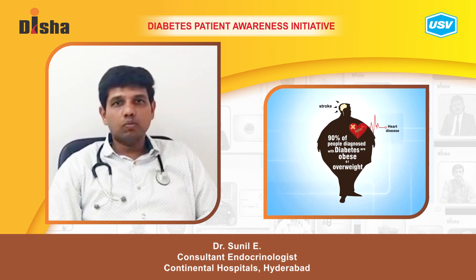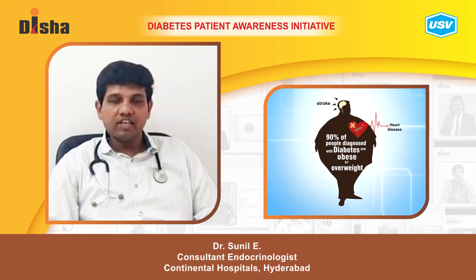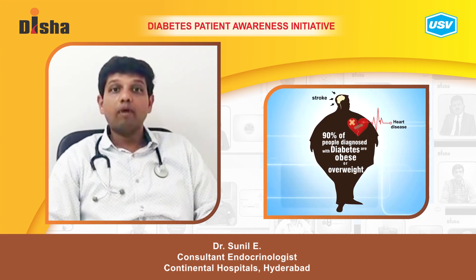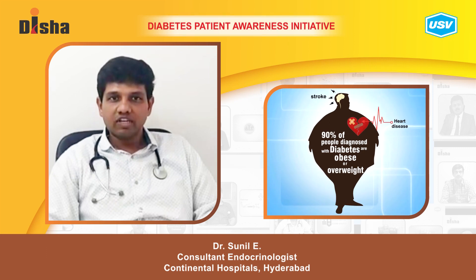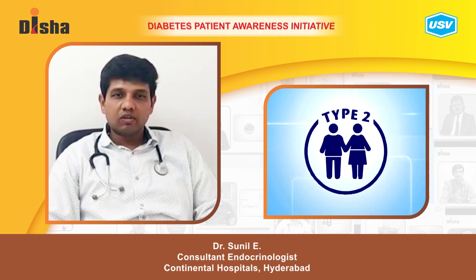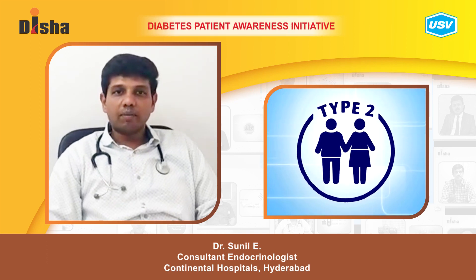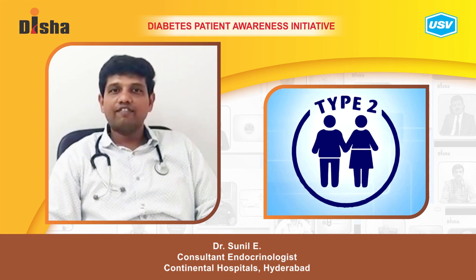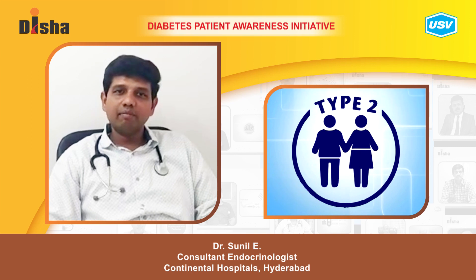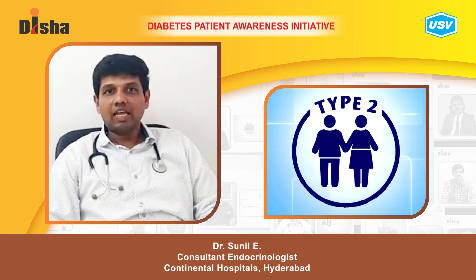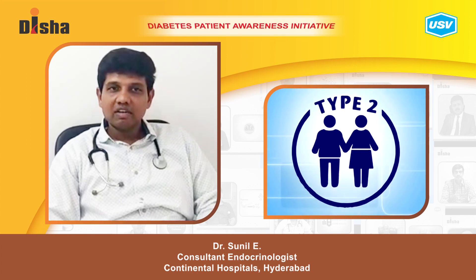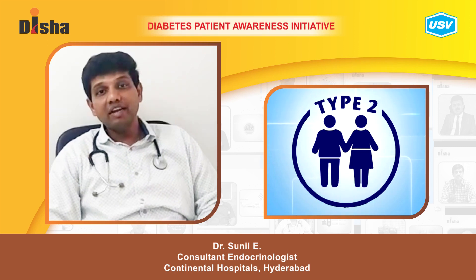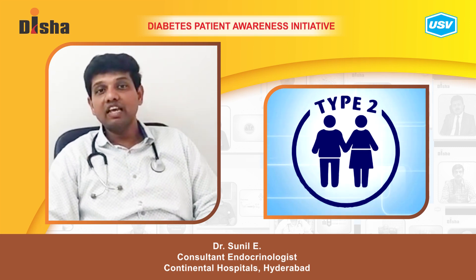Type 2 diabetes is commonly seen in obese individuals. Previously it was believed to be more common above 40 years of age, but with urbanization and the stressful life we are living, now it can be seen at any age — even in adolescents, where type 2 diabetes mellitus is being diagnosed with increasing frequency.